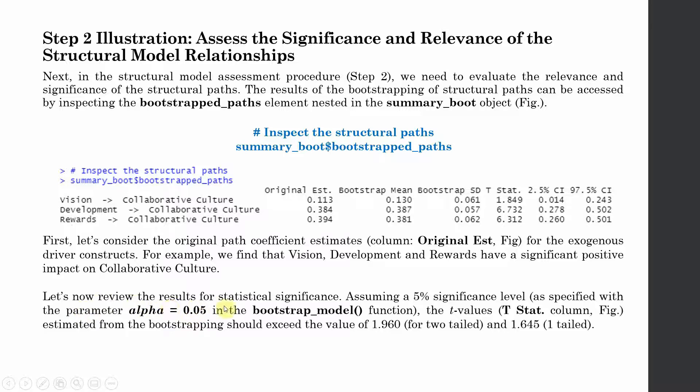Let's now review the results for statistical significance. Assuming a 5% confidence level as specified with the parameter earlier in the bootstrap model, the t values (the t statistic here) should exceed 1.96 in order to show that the relationships were significant. Is it exceeding 1.96?